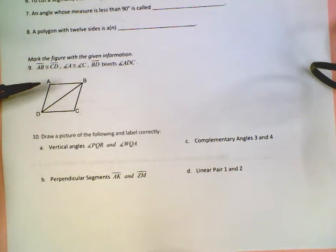It tells me that segment AB is congruent. That's what this symbol right here means. Congruent means the same. So segment AB is congruent or the same as segment CD.